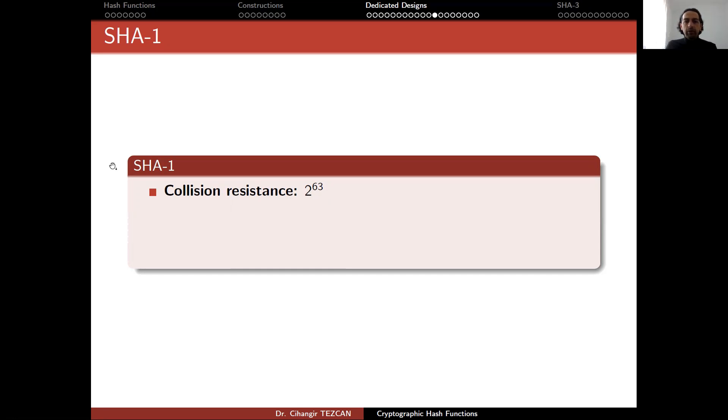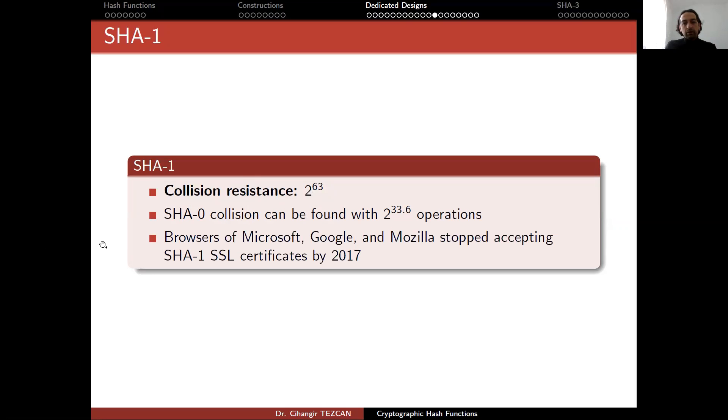For a very long time, it was a wonder if anybody could find the SHA-1 collision. But SHA-0 collisions can be found with a very small number of operations which can be done in a few seconds using a GPU, maybe in less than a second.